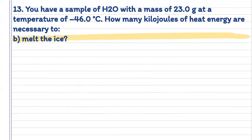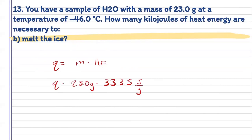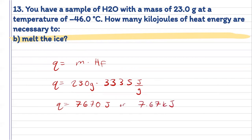For part B, we want to know how much energy we would need to melt that ice. We're going to have that phase change from solid to liquid, so we're going to have to use our heat of fusion. Our heat is equal to our mass times the heat of fusion of water. Our mass is 23.0 grams, and we know our heat of fusion. Plugging those numbers into our calculator, we get 7,670 joules, or 7.67 kilojoules.